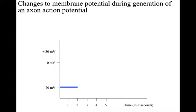Initially, the potential is steady over time at the resting minus 70 millivolts. Now, suppose that something depolarizes the membrane in this location.